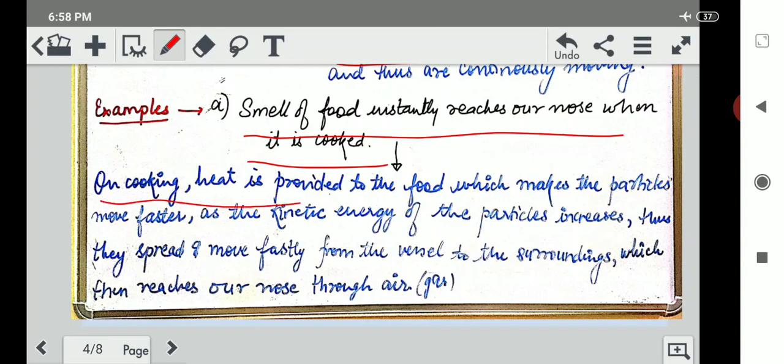On cooking, heat is provided to the food. Obviously stove pe food ban raha hai, stove se heat nikal raha hai. Heat is providing energy to the food particles. When food particles ko energy mil raha hai, their kinetic energy will increase. Anything which has space and has mass is matter. So food will also be matter because it is occupying some space and having some mass. Ab jab ki woh matter hai, to us ke andar kya hoga? Particles hai.